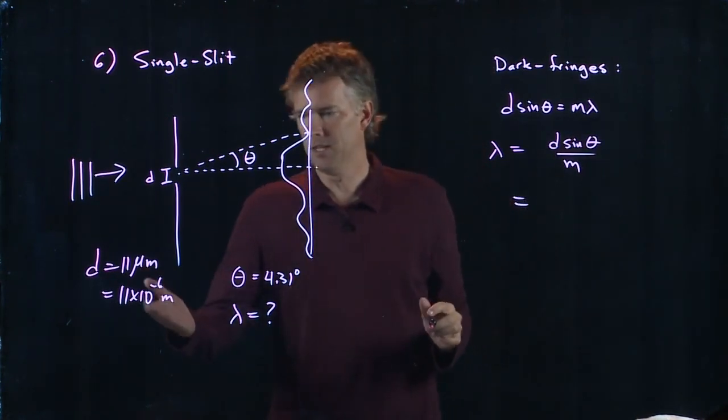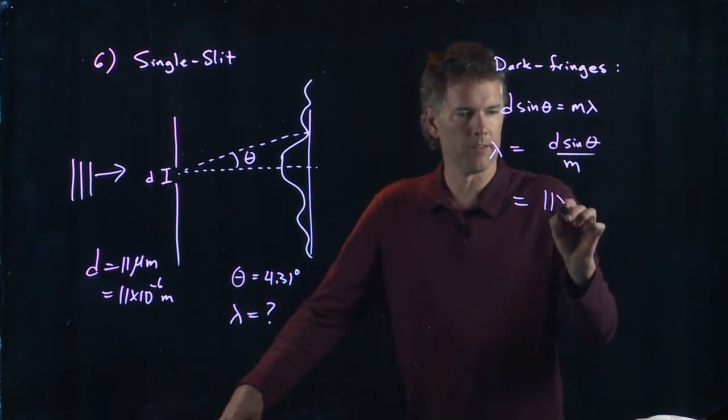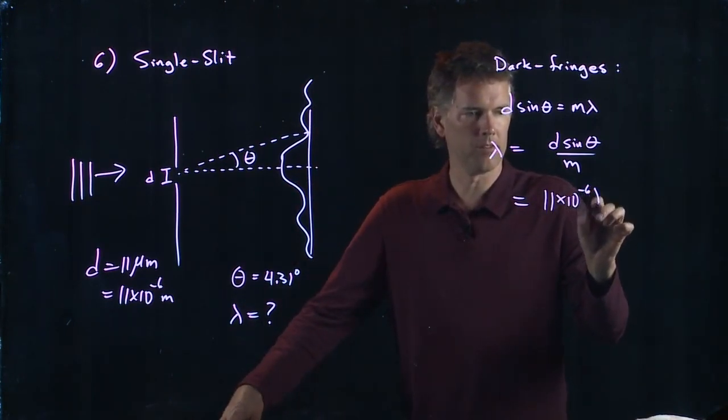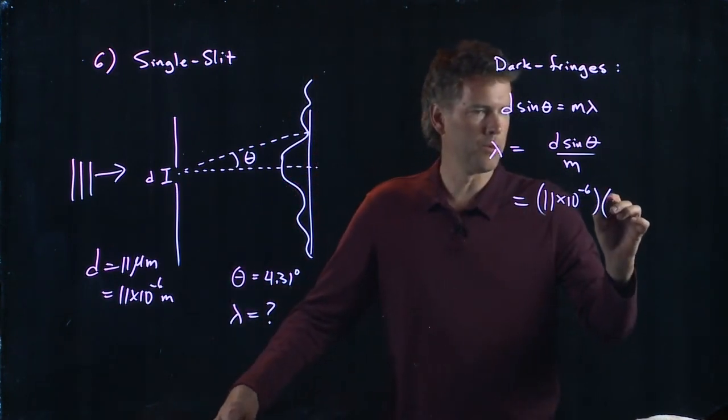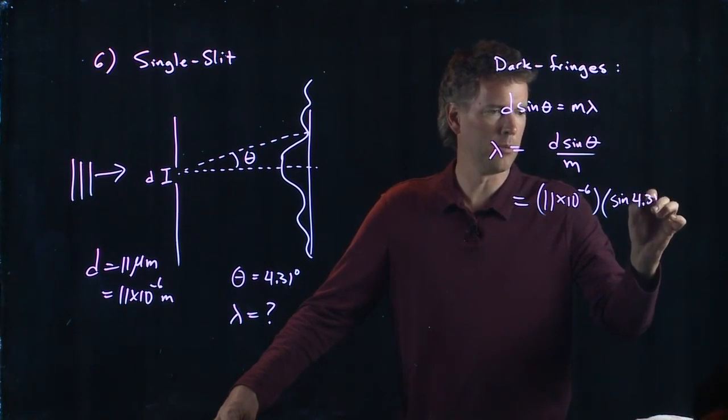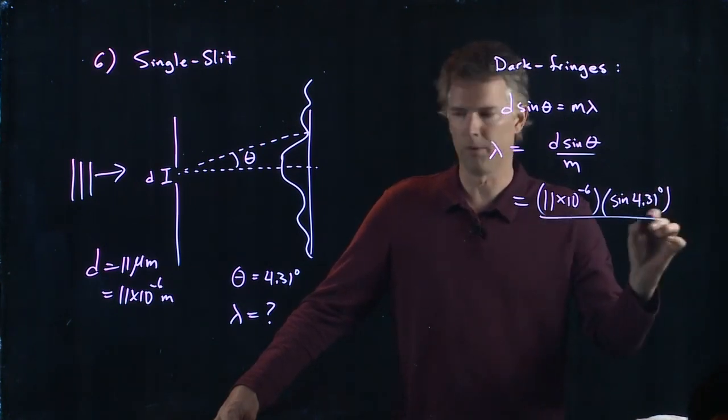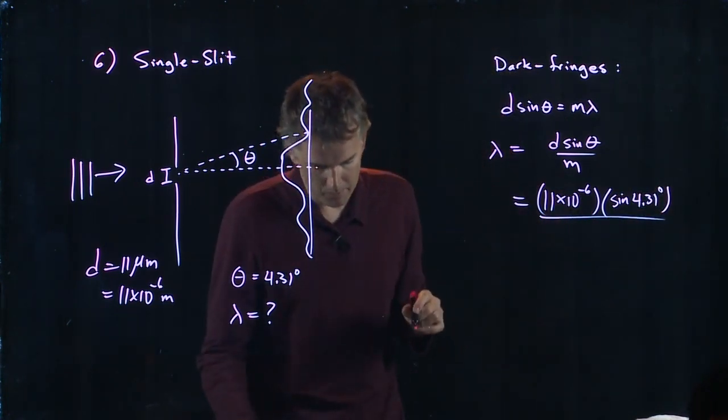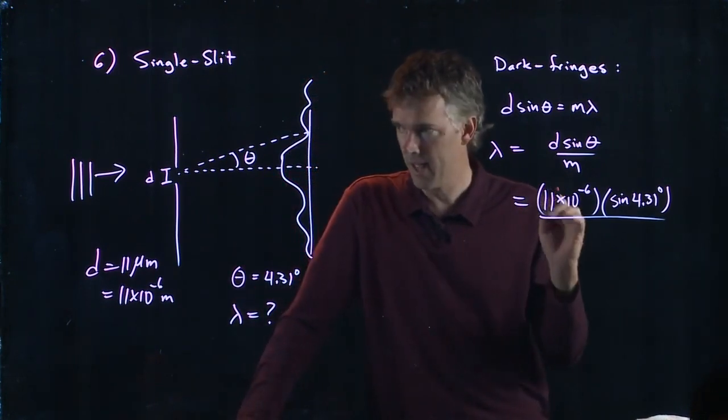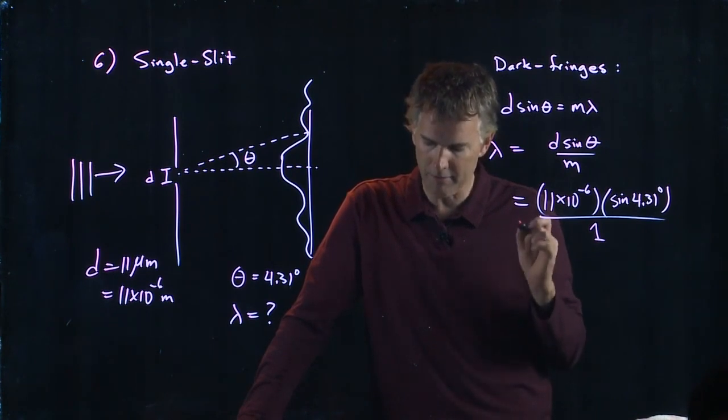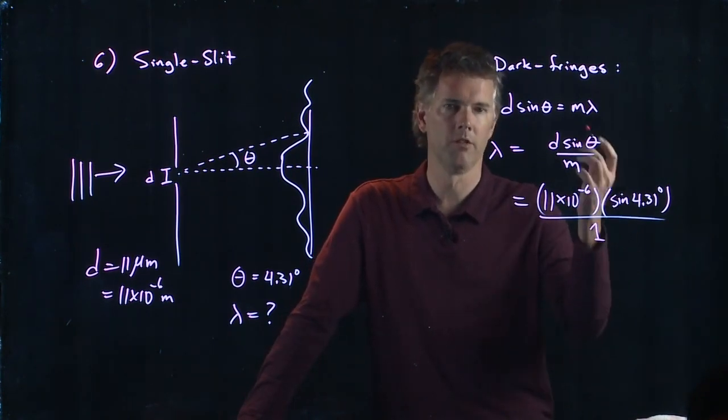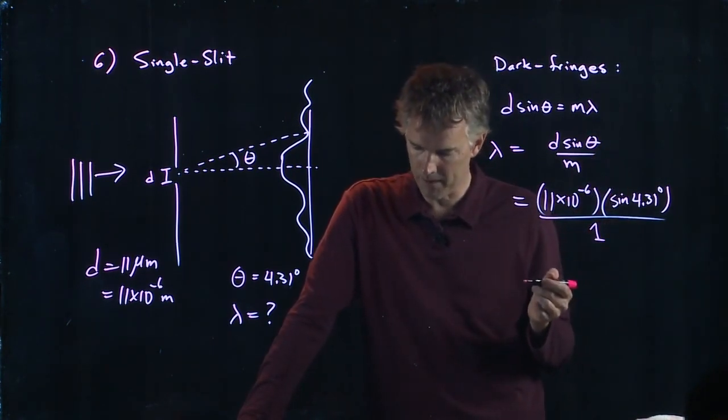We have D. D is 11 microns, so that's 11 times 10 to the minus 6. We have the angle, 4.31 degrees, so we can take the sine of 4.31 degrees. And then we have M for this case, because in the problem they say it's the first dark fringe, so M is in fact equal to 1 here.